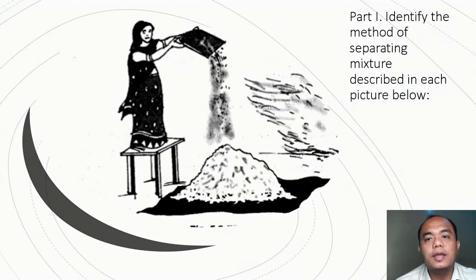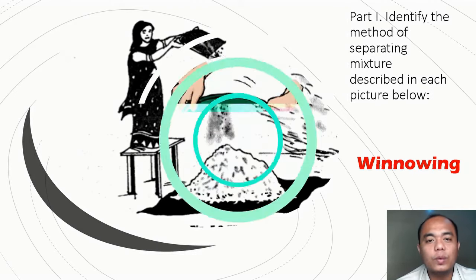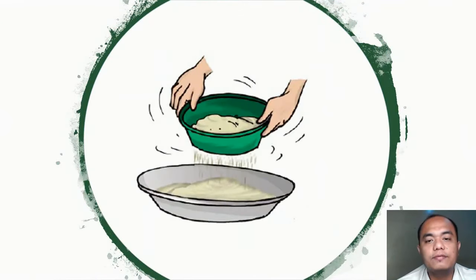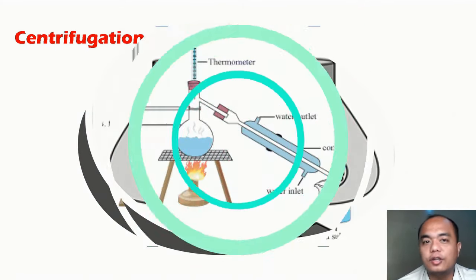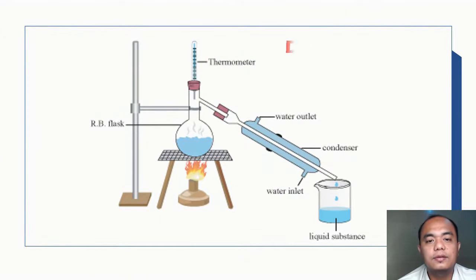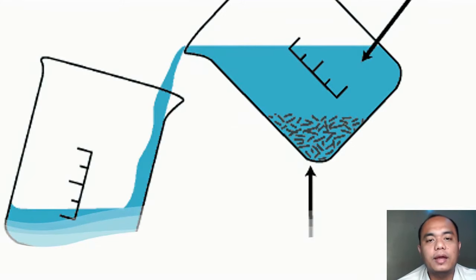Let's have an activity. Identify the methods of separating mixtures described in each picture. Number 1 — winnowing. Next — sieving. Next — centrifugation. And this one — distillation. This one — decantation.